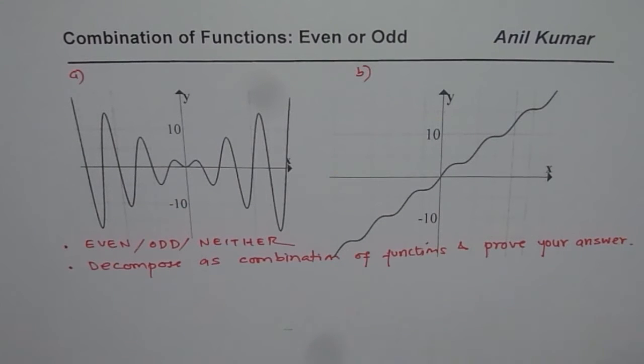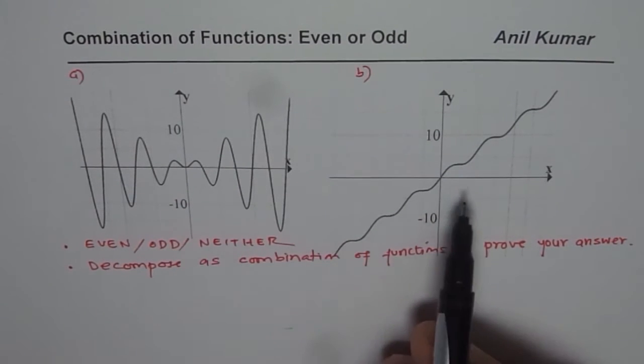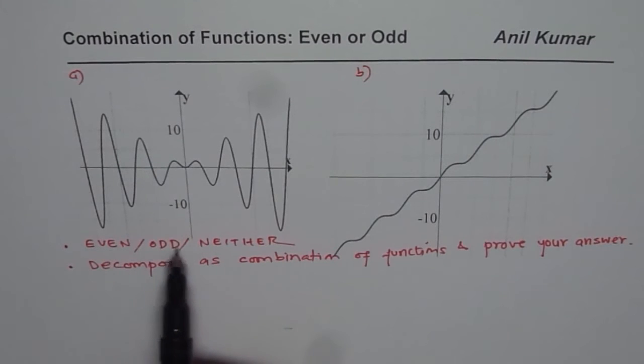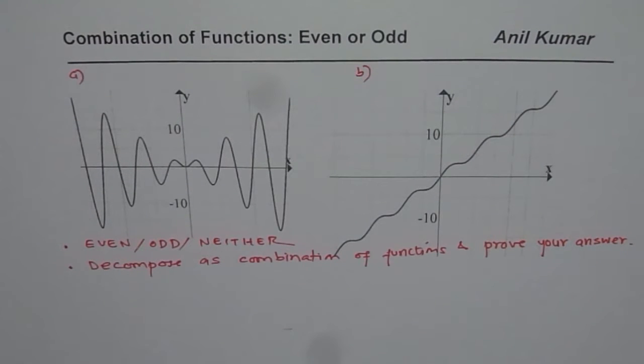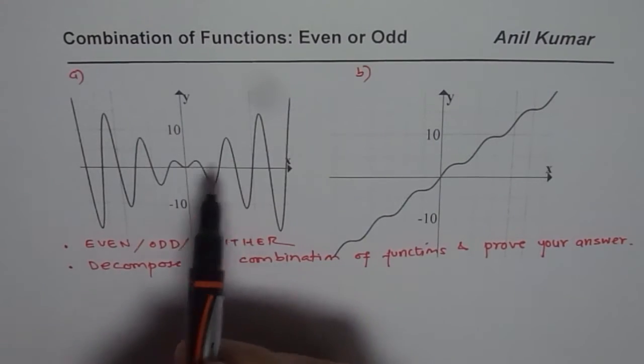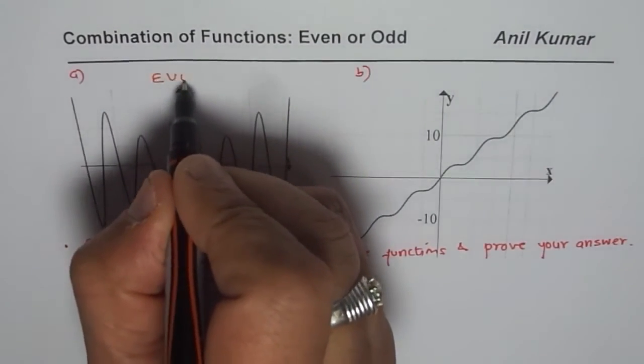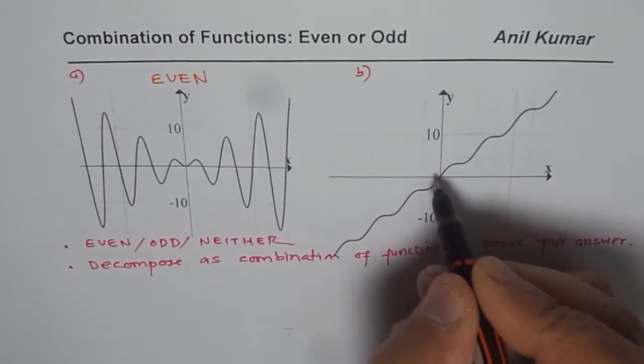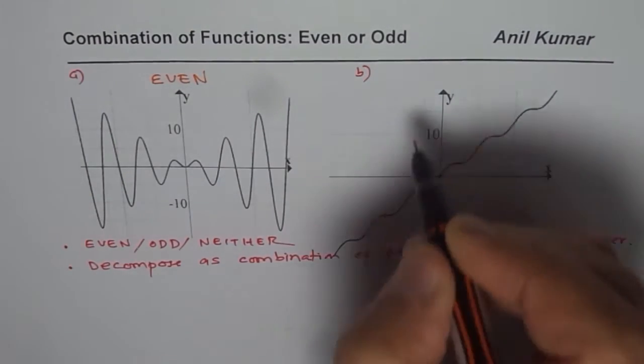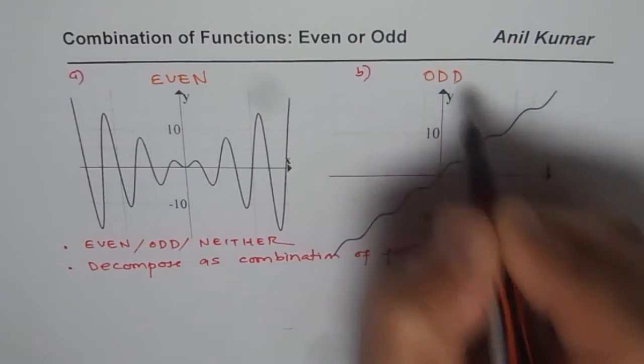Now one way I can decompose these functions. Let me first answer even or odd part. Clearly when I look at it this particular function is symmetric about the y-axis. So this function is even. However, this is symmetric about the origin. So this function is odd. So that part is very clear.